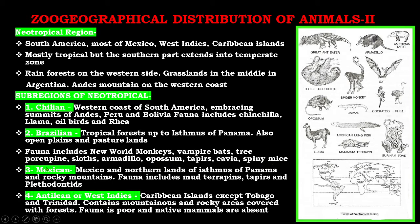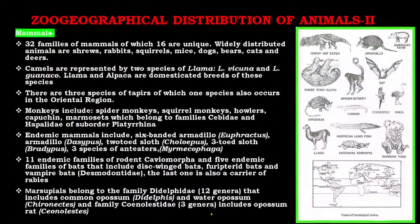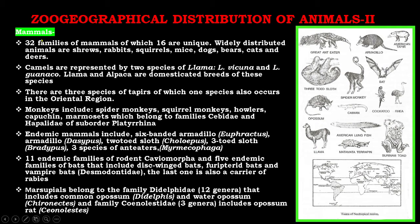The third sub-region is the Mexican sub-region, which includes Mexico and the northern land of the Isthmus of Panama and the Rocky Mountains. Fauna includes mud turtles, tapirs, and plethodontids. The fourth is the Antillian or West Indies sub-region, which includes Caribbean islands. The area contains mountainous and rocky areas covered with forest, fauna is poor, and native mammals are absent.